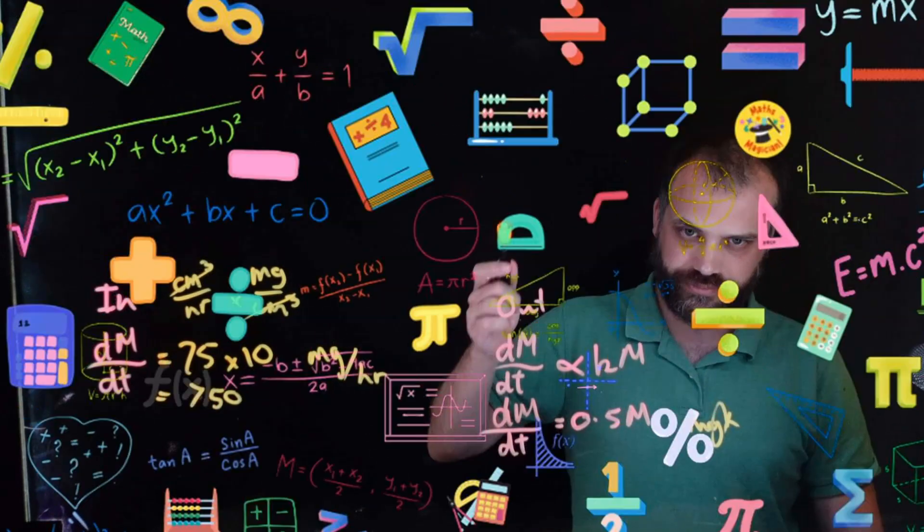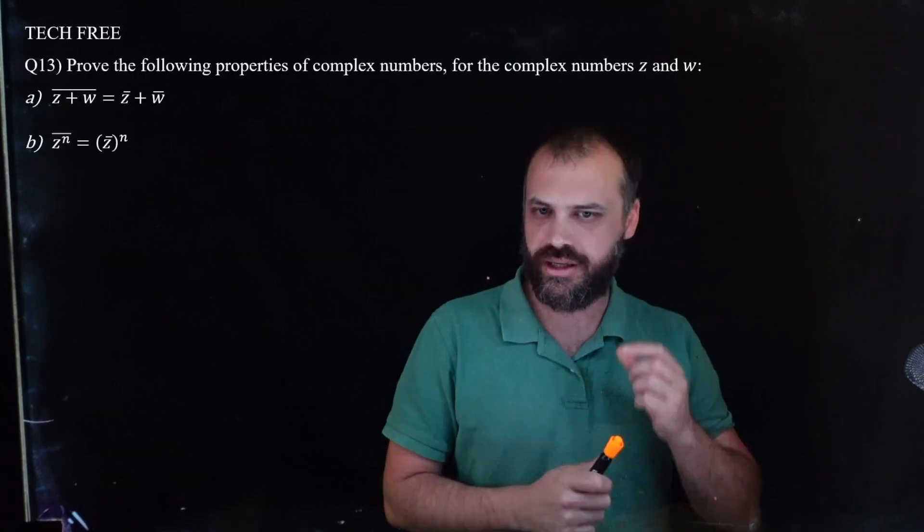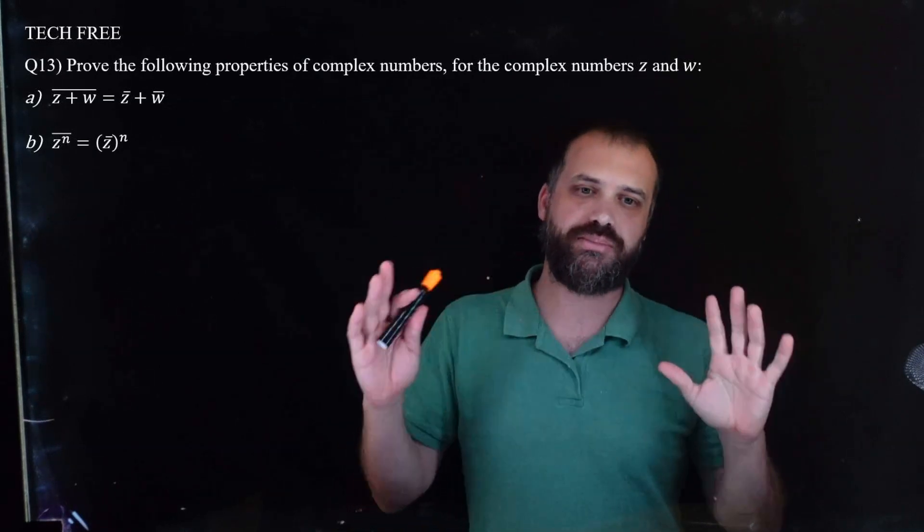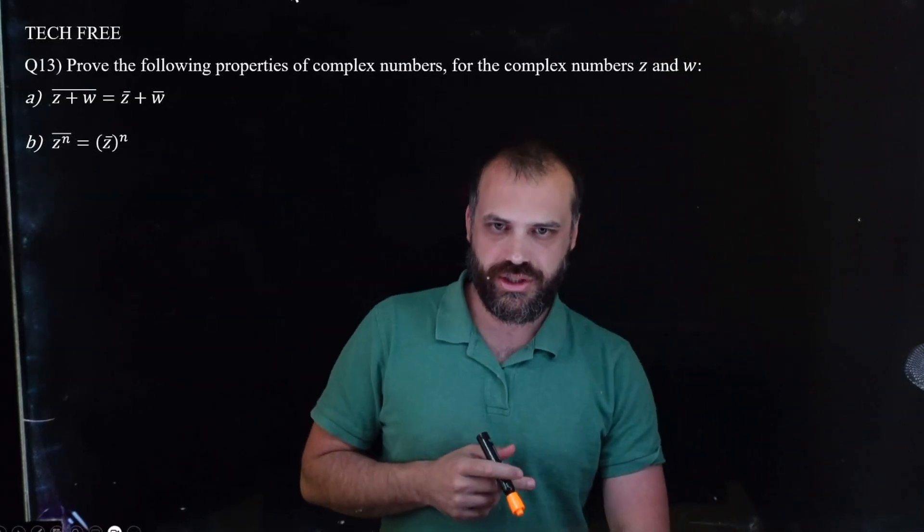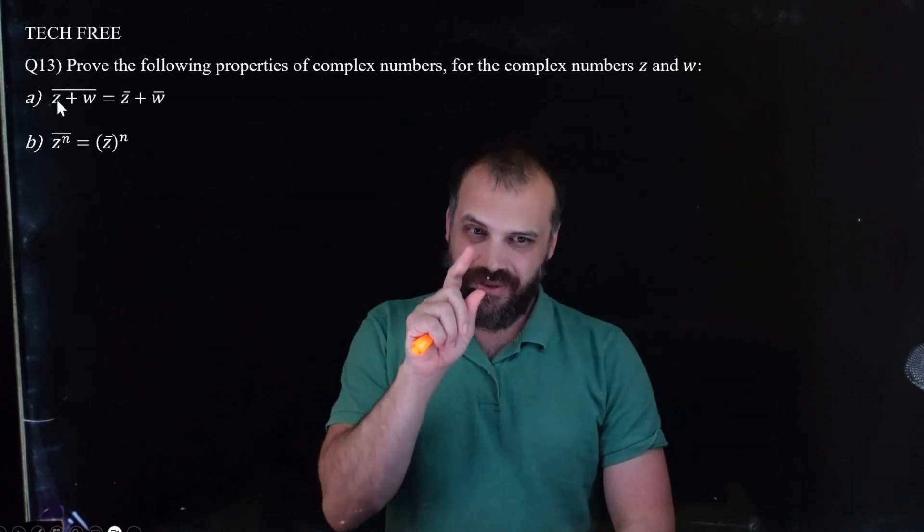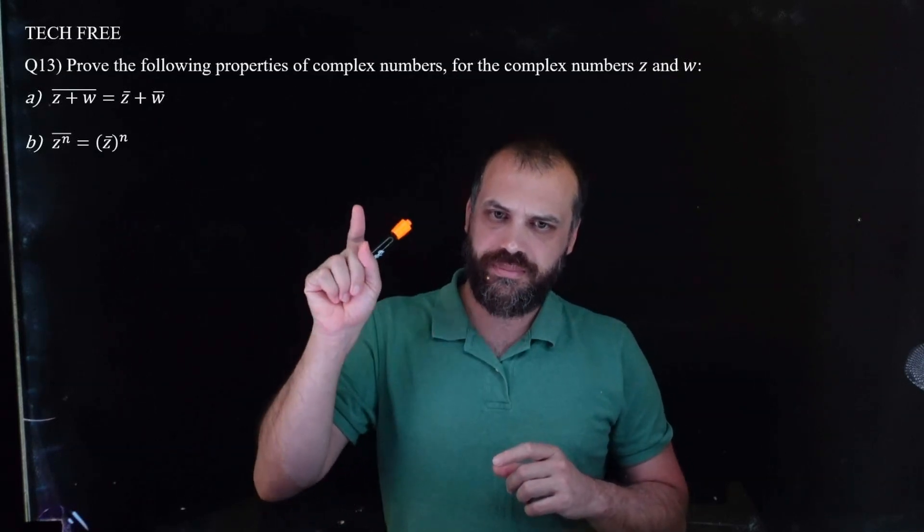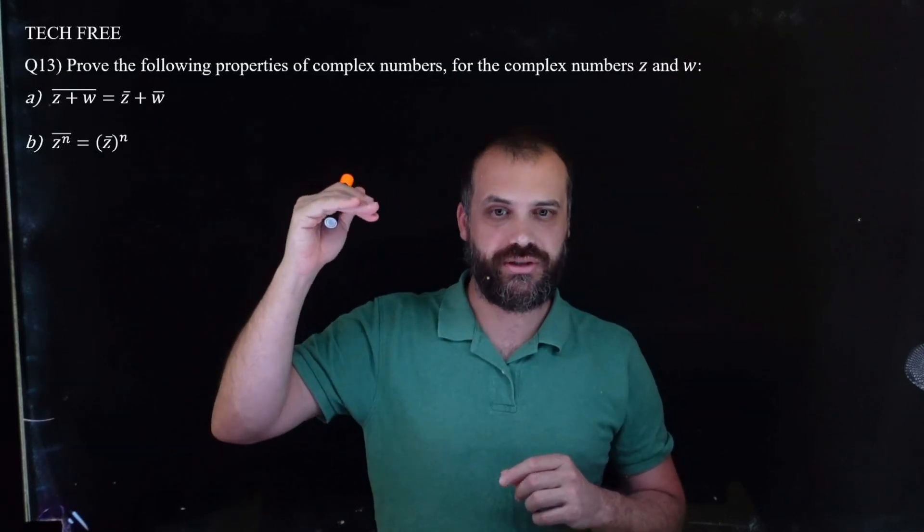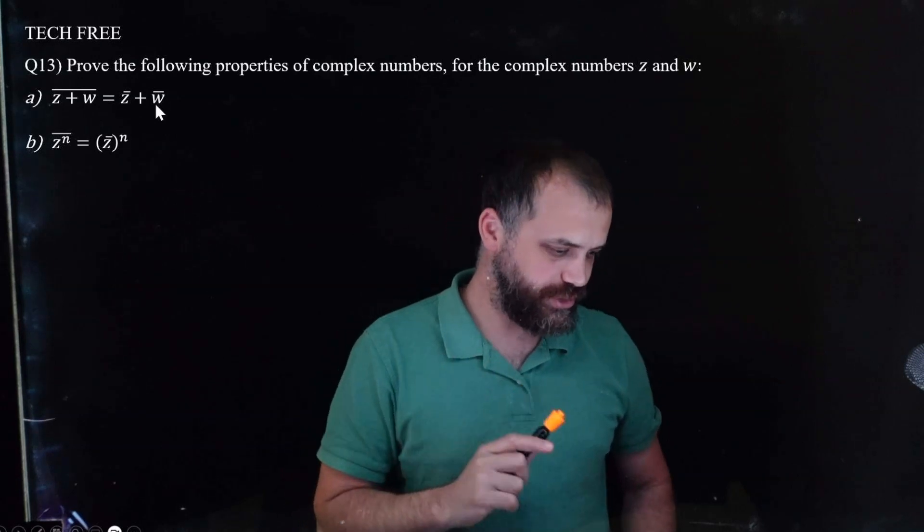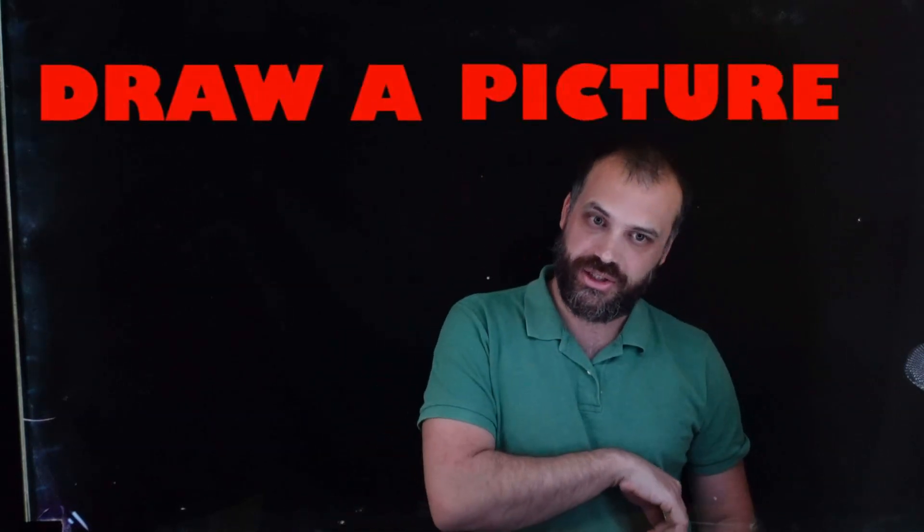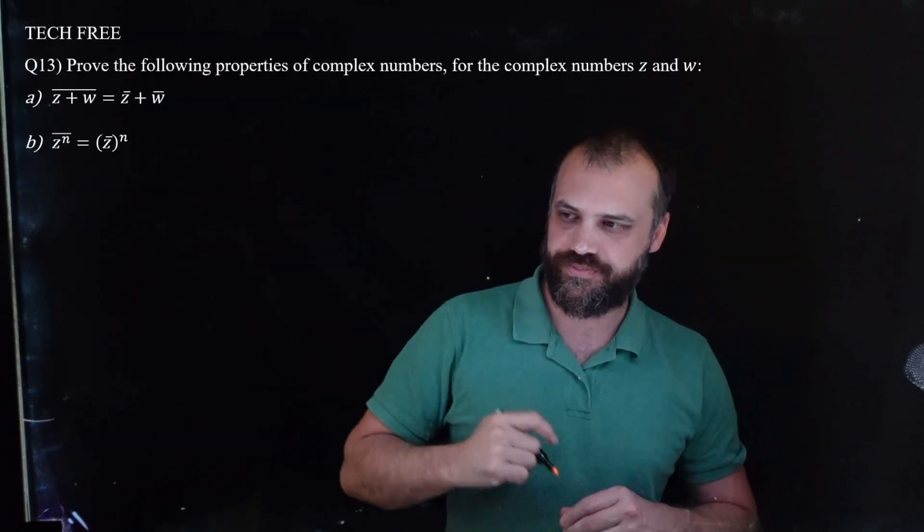Okay. I'm feeling good. Next question. These are two wonderful questions. These are questions that students have trouble with because there's no numbers in sight. You've got to go pure algebraic. Alright. So we're trying to prove the following properties. So let's do part A first and then we're going to do part B. They work slightly differently. I like having these two here. Alright. It says Z plus W, the conjugate of Z plus W, is equal to the conjugate of Z plus the conjugate of W.